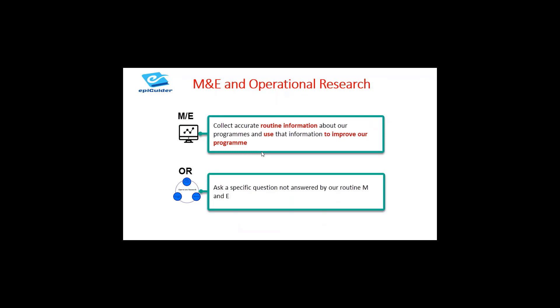But sometimes there are things that happen within our monitoring or evaluation systems that we cannot really answer. So operational research helps us to ask a specific question not answered by our monitoring and evaluation systems. For example, let's use what is happening with COVID-19: one of the interventions put in place is the obligatory wearing of a mask.